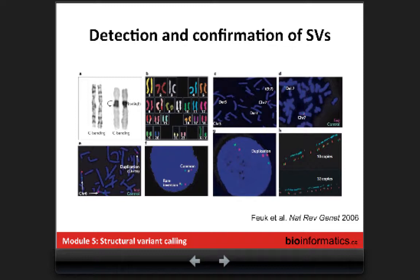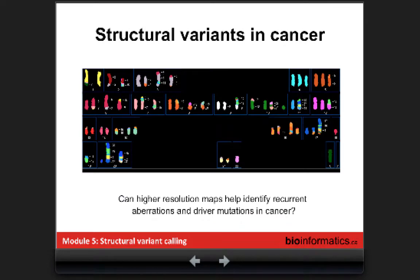When people started to look at structural variants, NGS was not existing. The way they did it was either by karyotyping, to look at events like translocation, or to do FISH, or all these kinds of techniques. As you can imagine, in that case the resolution and the accuracy was not really good.